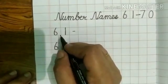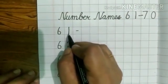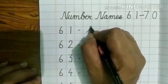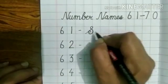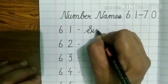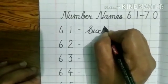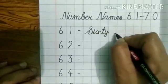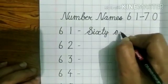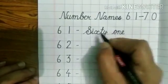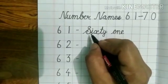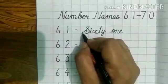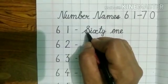Let's start with the first one, 61. So write down here as SIXTY 61. Students, always remember that the first letter of every number name should be capital.